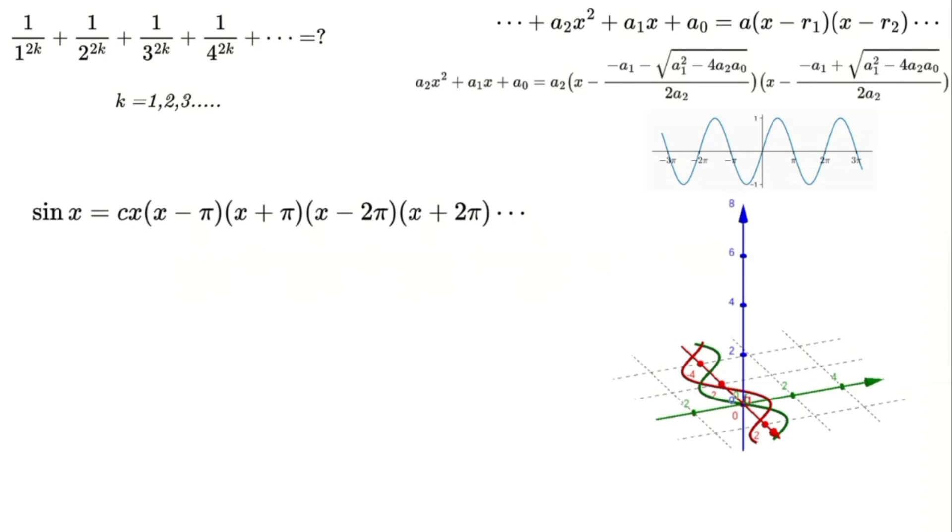Next, we use a classic formula in algebra: the difference of two squares. This simplifies the product representation of sine into a more workable form. Now comes an essential step: finding the value of the constant c.